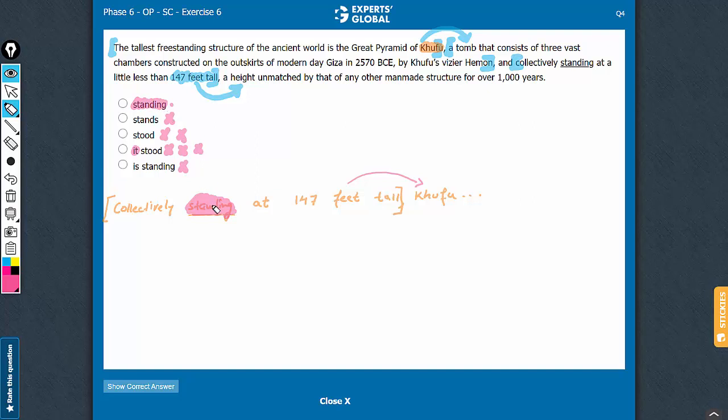Standing here is a present participle acting as a noun modifier. And the broad meaning turns out that collectively standing at 147 feet tall, Khufu is the tallest freestanding structure of the ancient world. A is the correct answer choice.